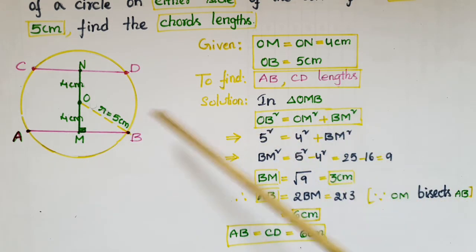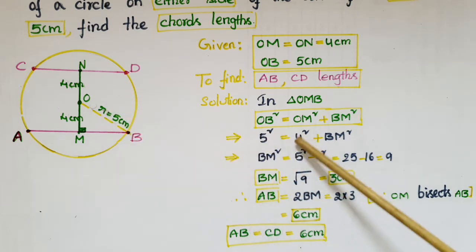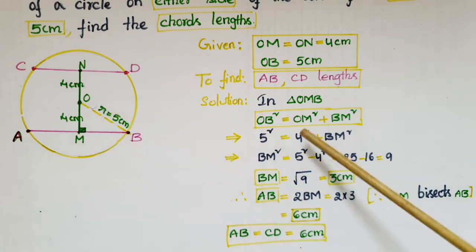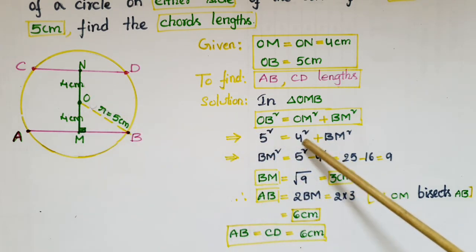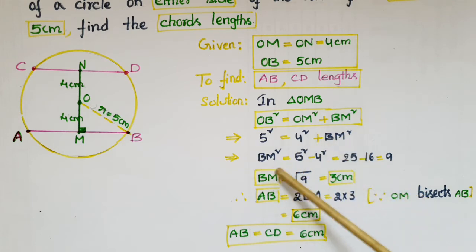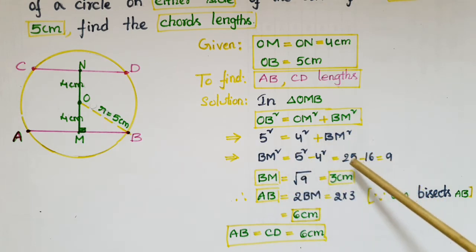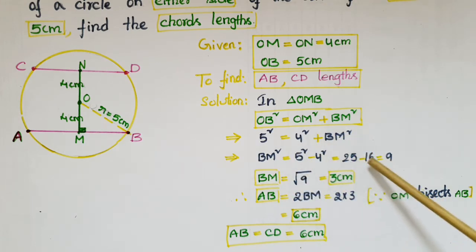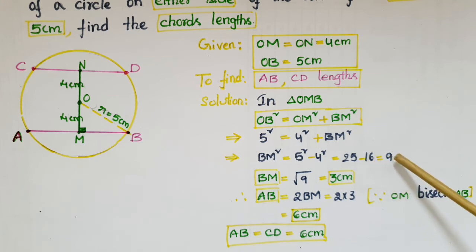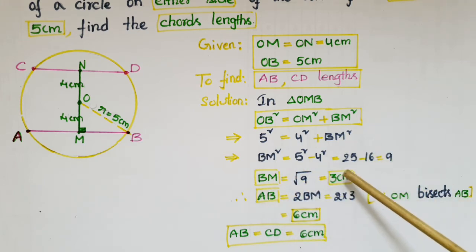OB is 5 centimeters, so 5 squared equals OM which is 4 centimeters, so 4 squared plus BM squared. Then BM squared equals 5 squared minus 4 squared, that is 25 minus 16, that is 9. So BM equals the square root of 9, that is 3 centimeters.